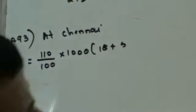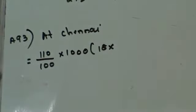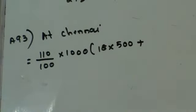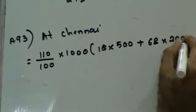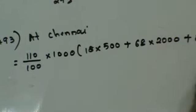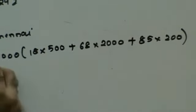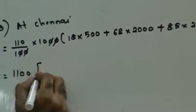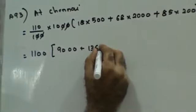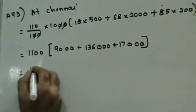If you look at the graph, right at the top, they have given you that number of pairs per day in thousands. So that number has to be multiplied by 1000. So I multiply by 1000. For Chennai, it is going to be 18 plus 68 plus 85. 18 into—18 is shoes—shoes is 500 per pair plus 68 into 2000 plus leather sandals is 85 into 200.